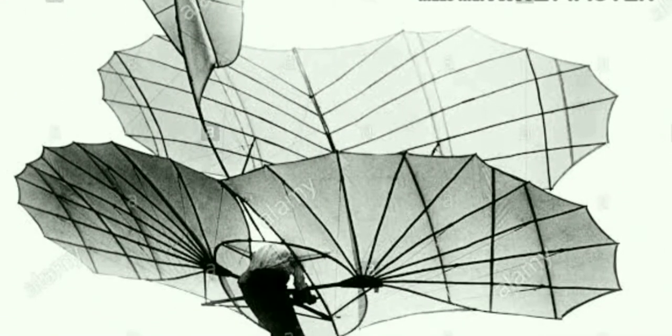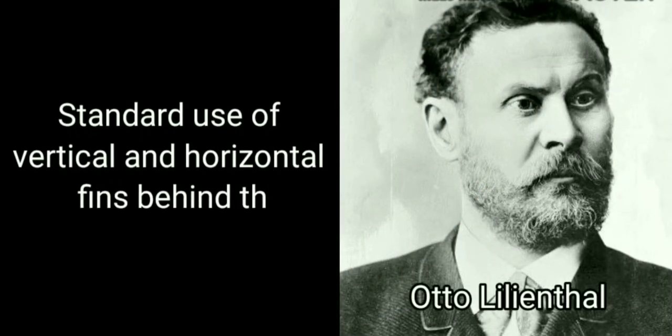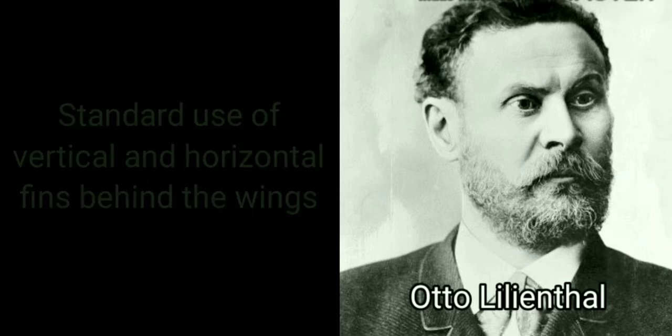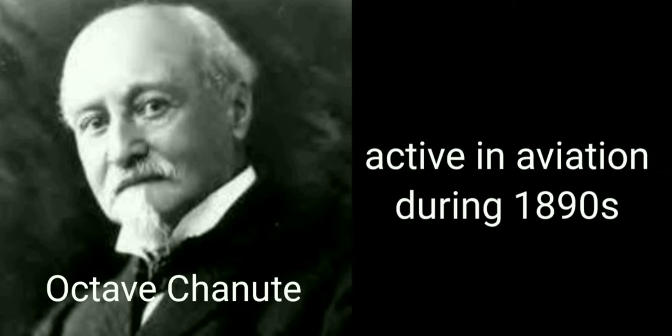Direction control of wings by including the earliest form of rudder on his glider. Otto Lilienthal built upon Cayley's discoveries. He manufactured and flew his own glider on over 2000 flights. His willow and cloth aircraft had wings designed from extensive study of bird wings. Lilienthal also made standard use of vertical and horizontal fins behind the wings, and with all of these he proved that man could fly. Octave Chanute, a retired railroad and bridge engineer, was active in aviation during the 1890s. He built gliders similar to Lilienthal's and then his own.